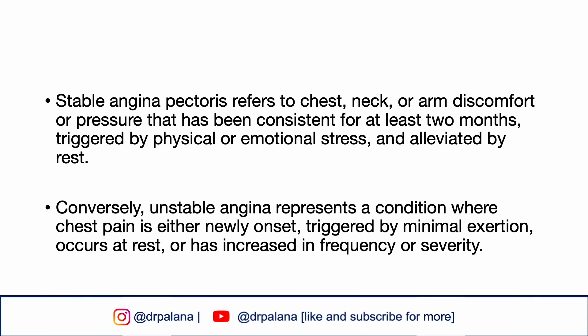Stable angina pectoris refers to chest, neck, and arm discomfort or pressure that has been consistent for at least 2 months, triggered by physical or emotional stress, and alleviated by rest. Conversely, unstable angina represents a condition where chest pain is either newly onset, triggered by minimal exertion, occurs at rest, or has an increase in frequency or severity.